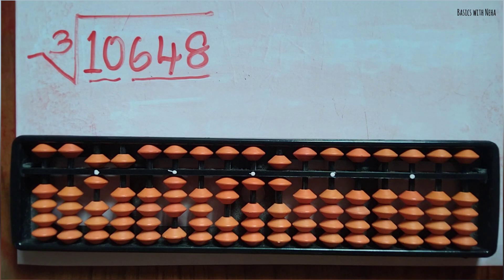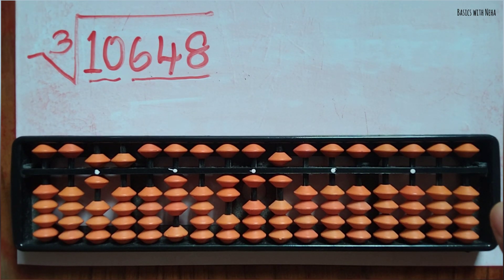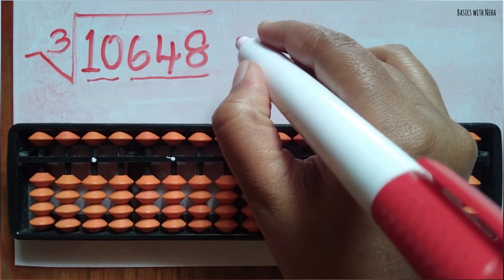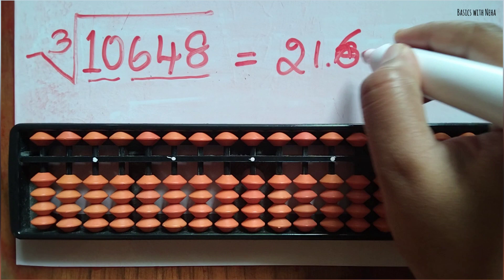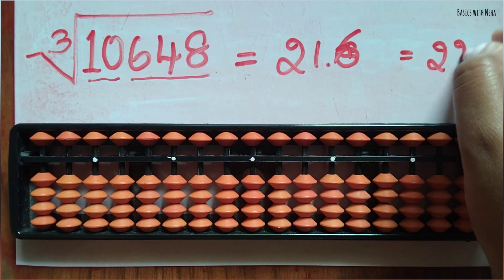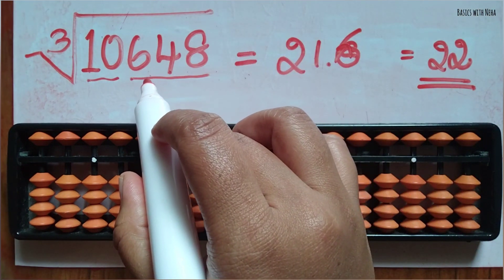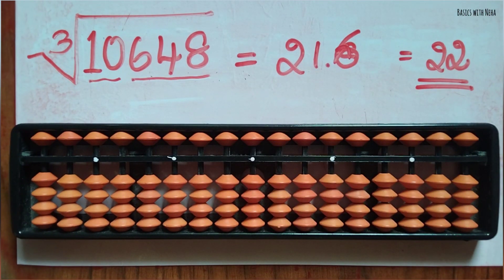You get answers like this in decimals where you have to do the approximation and get the final answer — it is similar to using a normal calculator, but with a scientific calculator you can easily find the cube root. The answer on an abacus tool comes to approximately 21.6, which you take as 22. The exact answer is 22, since 22 cubed gives 10648. I hope this video helps — for more videos please subscribe, thank you.